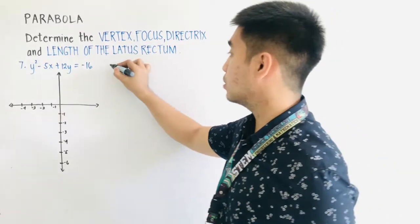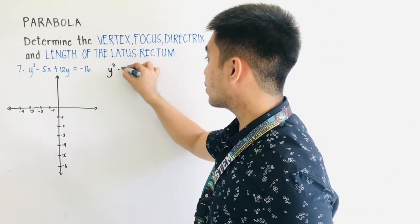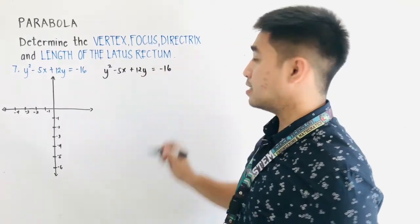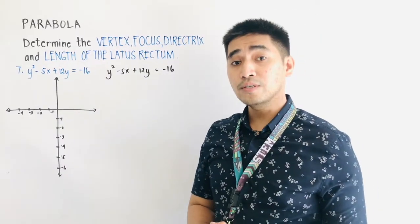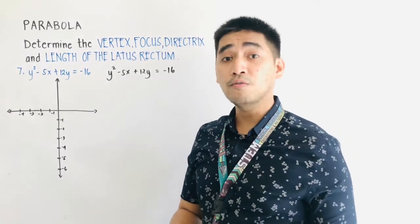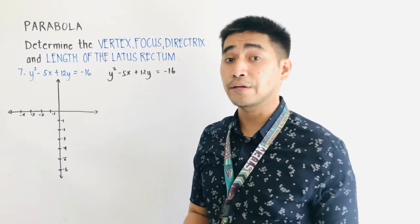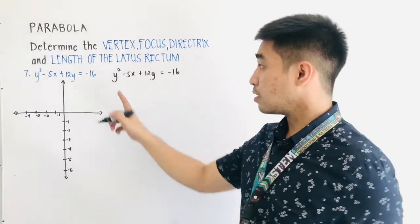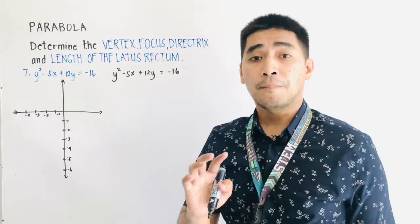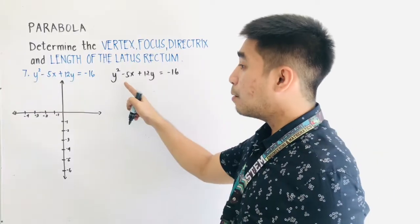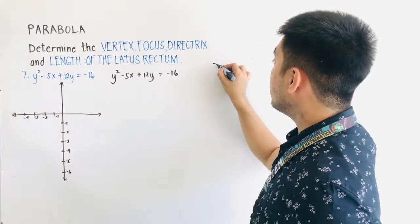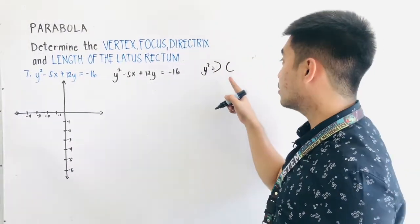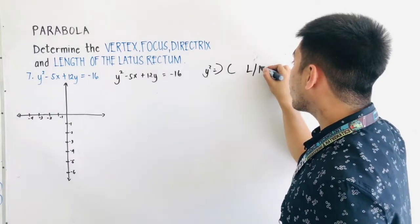So let's write down the equation. We have y² − 5x + 12y = −16. All we have to do is to complete the term being squared, and we only have one term being squared here: y². If y² is the squared term, remember that our parabola is either opening to the left or to the right.